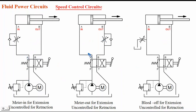The first circuit is meter-in for extension and uncontrolled during retraction. The second circuit is meter-out for extension and uncontrolled during retraction. The third circuit is bleed-off for extension and uncontrolled during retraction. In all three circuits, speed is controlled during extension only.